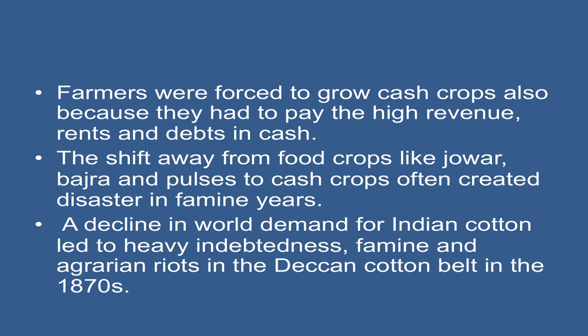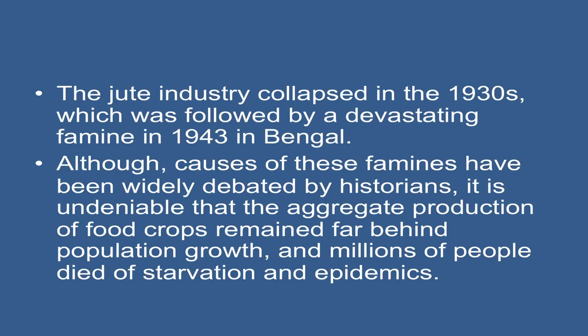Farmers were forced to grow cash crops also because they had to pay high revenue rents and debts in cash. The shift away from food crops like jowar, bajra, and pulses to cash crops often created disaster in famine years. A decline in world demand for Indian cotton led to heavy indebtedness, famine, and agrarian riots in the Deccan cotton belt in the 1870s. The jute industry collapsed in the 1930s, which was followed by a devastating famine in 1943 in Bengal.